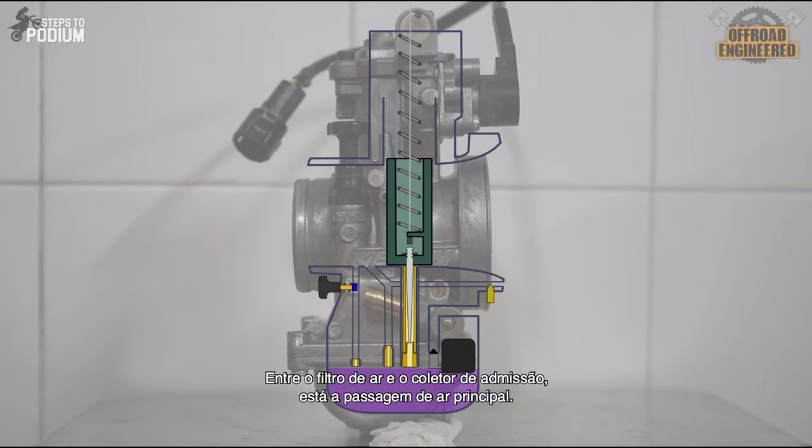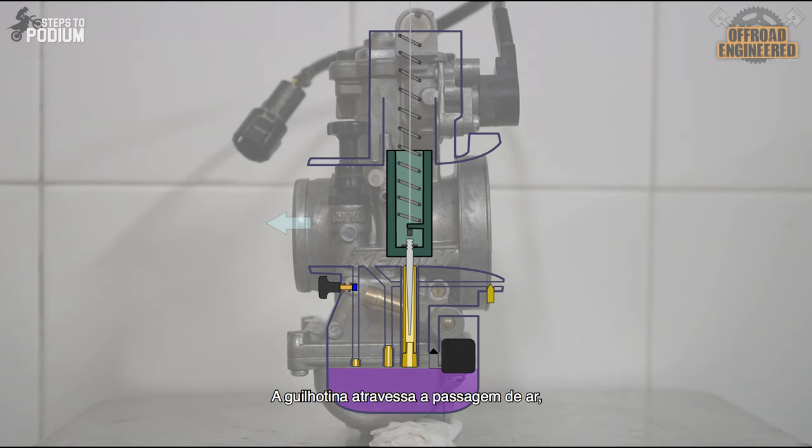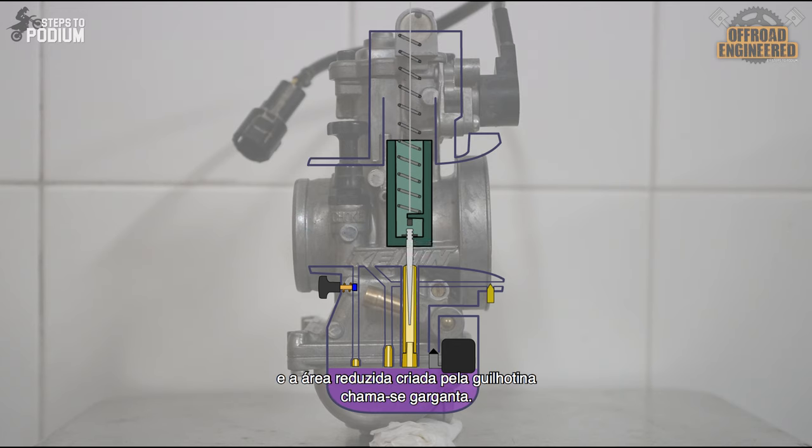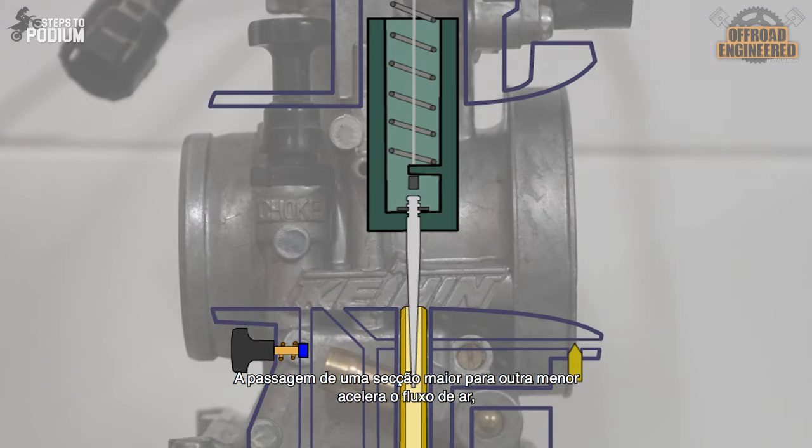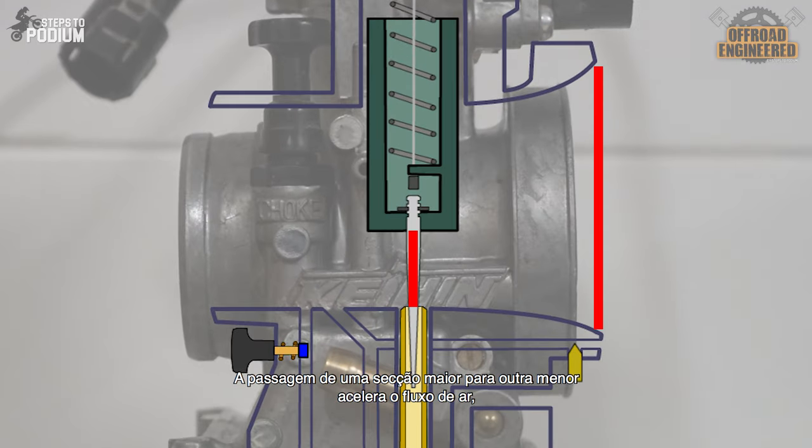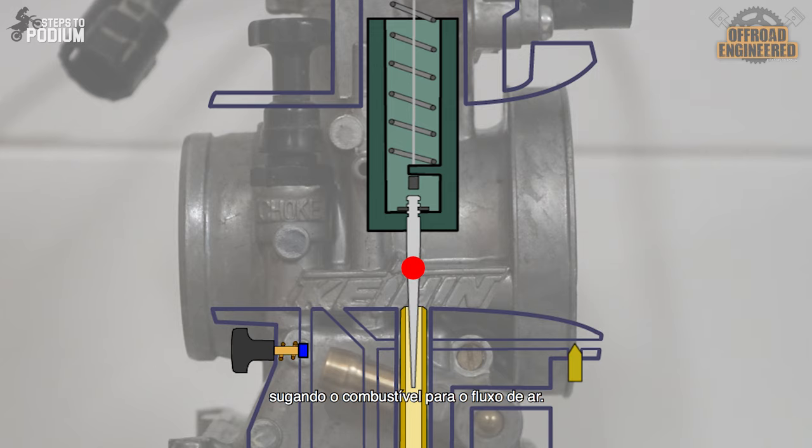From the air filter to the inlet manifold there's the main air passage. The slide crosses the main air passage and the reduced cross section created by the slide is called the throat. This variation is responsible for accelerating the airflow going to the engine while also creating a low pressure point on the throat and thus sucking fuel into the airflow.